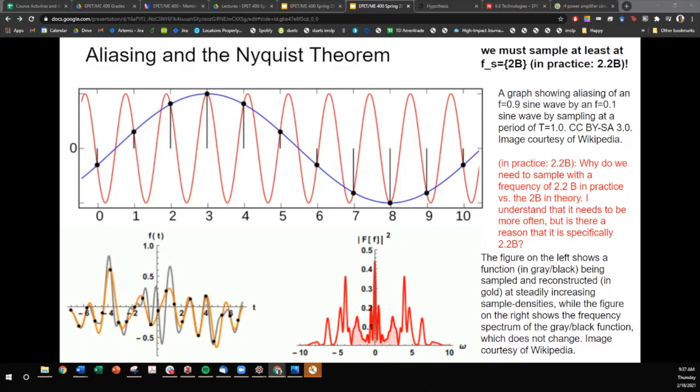Here's a question. Why do we need to sample with a frequency of 2.2 in practice versus the 2b in theory? I understand that it needs to be more often, but is there a reason that it is specifically 2.2? The reason why it's 2.2 times the bandwidth is because we want to add some margin in there. So 2 is going to give us the theoretical precision to separate two signals apart, but then that extra 0.2 is to add margin to that. In implementation, we're going to stray away from theoretical calculations, so to compensate for that, we just add margin.